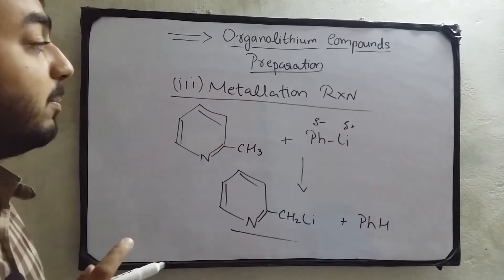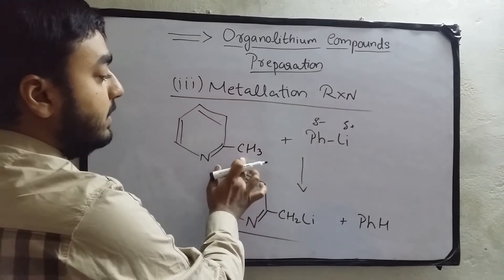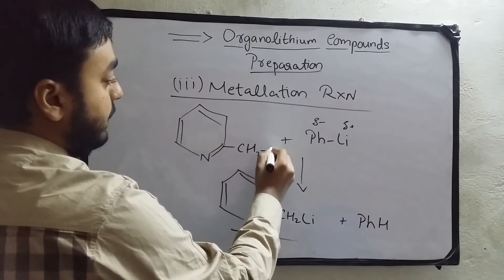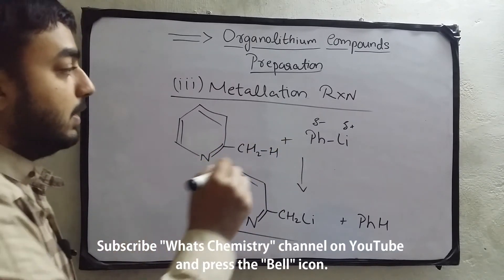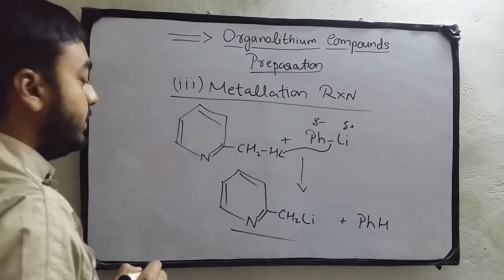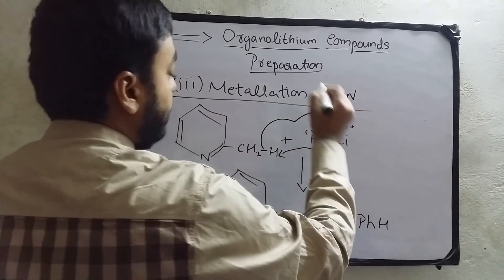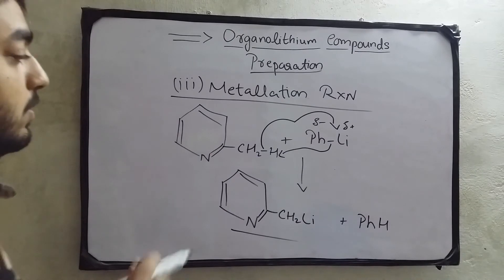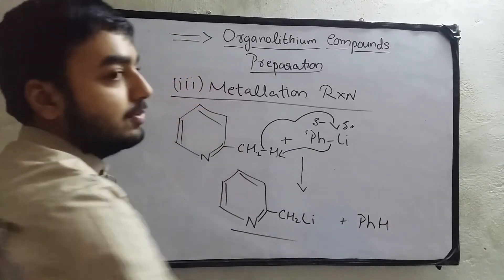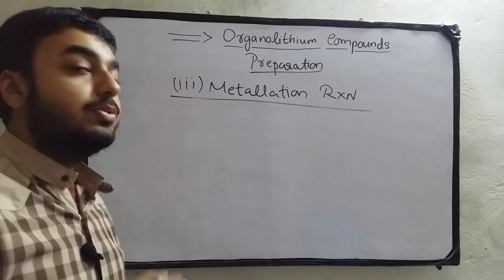The mechanism of this metalation reaction: we write CH3 as CH2 and H. The Li-C bond attacks on this hydrogen, and as a result this bond attaches with lithium. In this way the organolithium compound is formed, with phenyl taking the hydrogen.